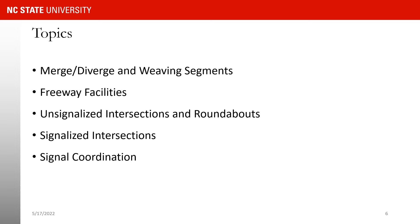Then we talk about merge-diverge and weaving segments. At this point we will have talked about all different segments on freeway facilities, so we will start talking about freeway facilities as a system, not individual segments. Then we cover unsignalized intersections — two-way stop control and roundabouts — then signalized intersections with pre-timed and actuated control, and finally signal coordination.